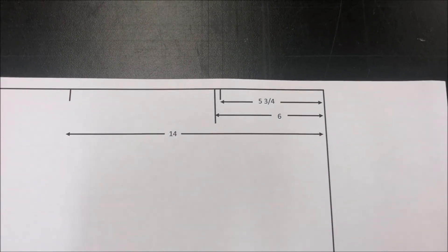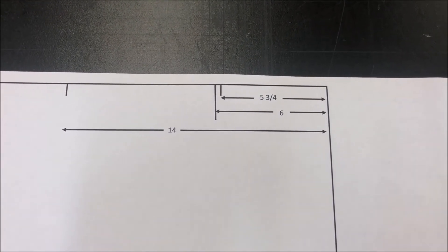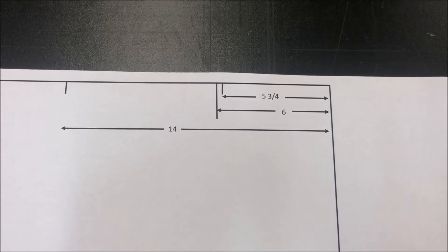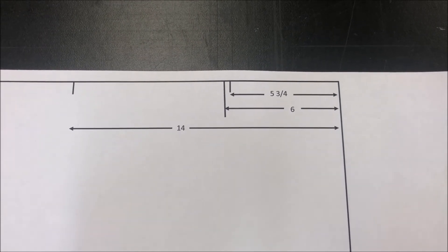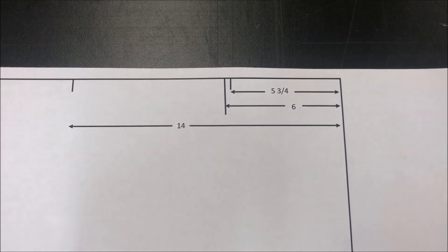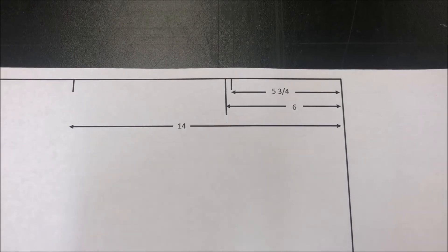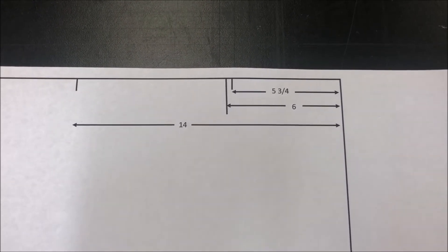When you've got the rectangle drawn, we're going to make three tick marks. We're going to measure from the right hand side: go over 14 inches and make a little tick mark, six inches make a tick mark, five and three quarters make a tick mark.